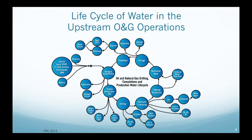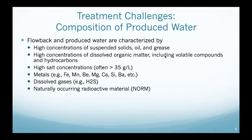I really like this diagram from EWI that shows the life cycle of water in the oil and gas industry — you can see treatment, storage, use, reuse, and use for different things — which tells us that the oil and gas industry is also a water industry. Anything we can do to optimize their use of water will help everybody, because at the end of the day we are all users of energy. I'll specifically focus on produced water.